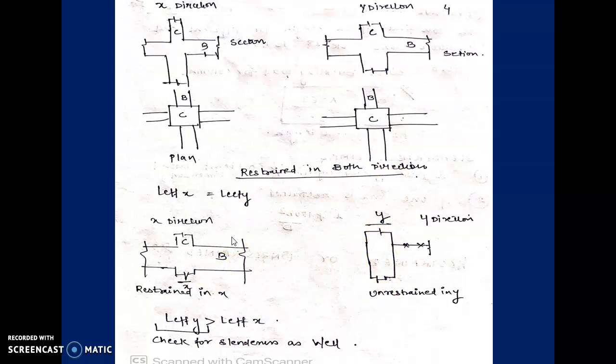For example, if there is a beam in the x-direction and the floor height is 3 meters, then the effective length becomes 3 meters. But if there is no beam in the y-direction between two floors, then in the y-direction the same column has an effective length of 6 meters. This is very important to understand because effective length plays a very important role.